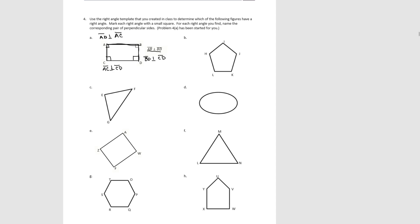Pause the video and mark any perpendicular lines in B. For this one, there were none — all these angles are either acute or obtuse. Try C. We have one right angle here, so we say that EF is perpendicular to EG. Try D. For D, we also have none. A circle doesn't have any angles by definition.